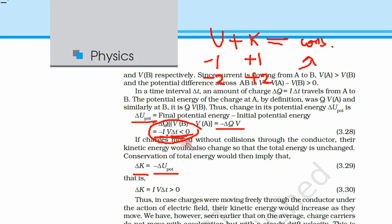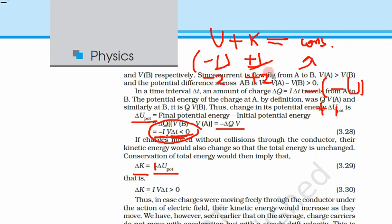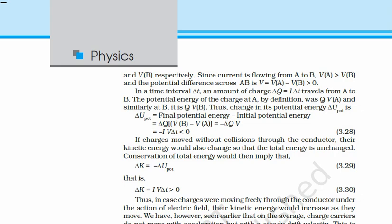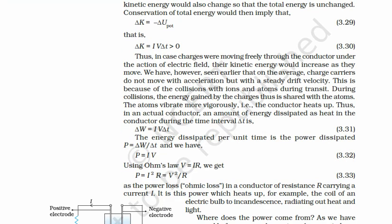Since delta U is already negative, minus delta U gives a positive value. So delta K = I·V·delta t, which is greater than zero — it is positive. This means the kinetic energy of the charge carriers is increasing.